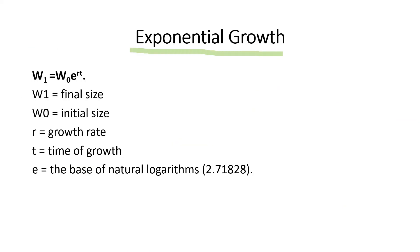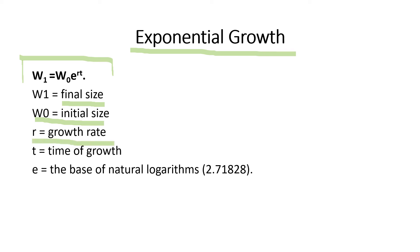The formula for exponential growth is: W1 = W0 × e^(RT), where W1 is the final size, W0 is the initial size, R is the growth rate, T is the time of growth, and e is the base of the natural logarithm, equal to 2.71828.